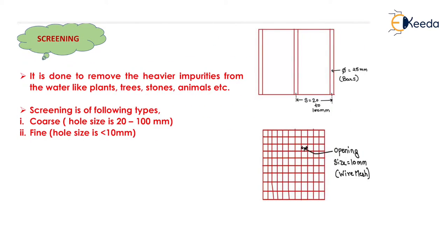What is screening? Screening is generally done to remove the heavier impurities from the water, like plants, trees, stones, animals, etc. It is generally carried out for surface water.